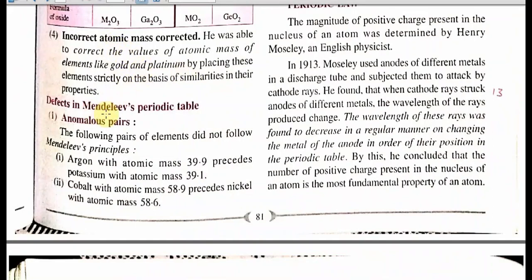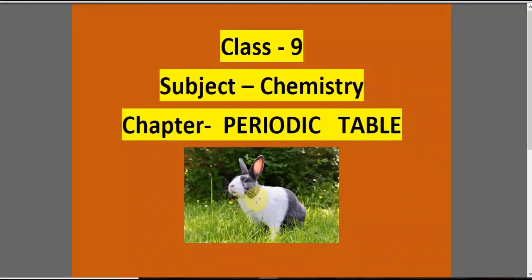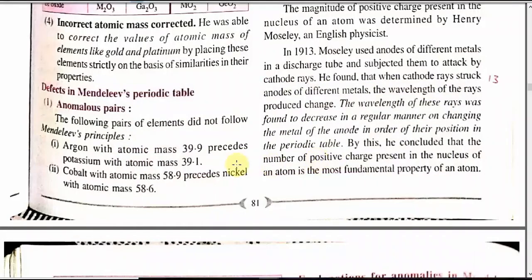There were some defects later discovered. Let's see what were the defects in Mendeleev's Periodic Table. The first defect is anomalous pairs. The following pairs of elements do not follow Mendeleev's principle: argon with atomic mass 39 precedes potassium with atomic mass 39.1; cobalt with atomic mass 58.9 precedes nickel with atomic mass 58.6.